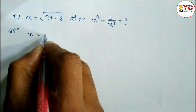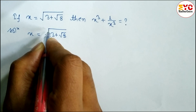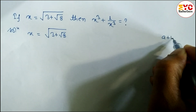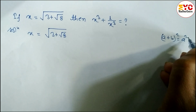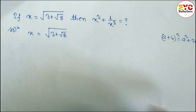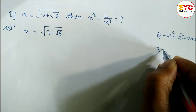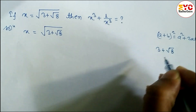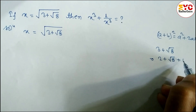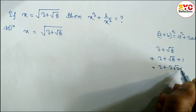The value of x is equal to √(3 + √8). First of all, we have to remove this root. The formula of (a + b)² is a² + 2ab + b². We have to convert 3 + √8 into the form a² + 2ab + b². We can write this as 2 + √8 + 1.